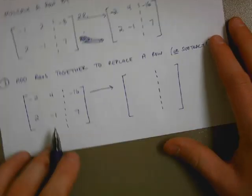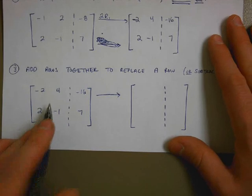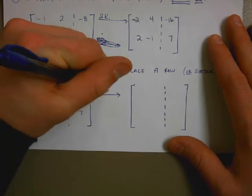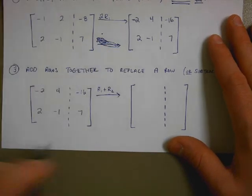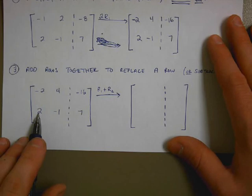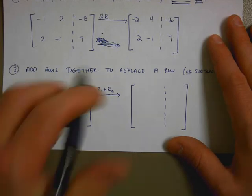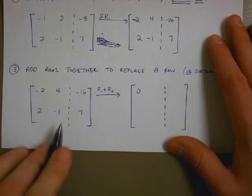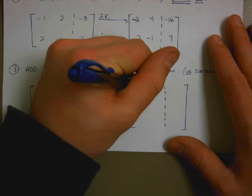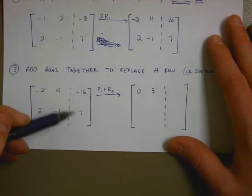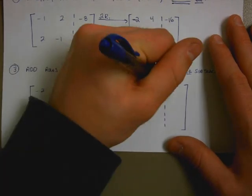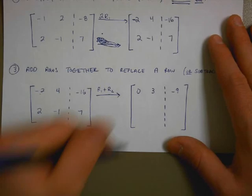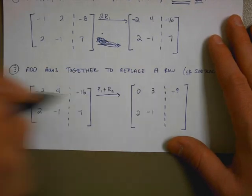And if I wanted to, I could replace the top row by the addition of row 1 and row 2. In other words, if I add row 1 and row 2 together, 2 plus negative 2 is 0, 4 plus negative 1 is 3, and 7 minus 16 is negative 9. And then I can just rewrite the second column down.